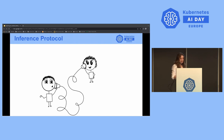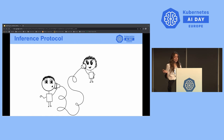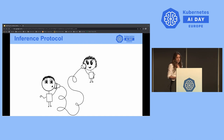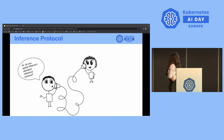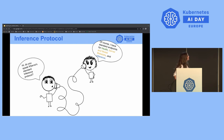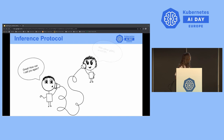Another important feature of KServe is that it uses a standardized inference protocol across all serving runtimes, so people can easily switch from, say, TensorFlow to PyTorch without needing to change how they talk to the inference service. This also makes it easy for testing and benchmarking. KServe supports both HTTP and gRPC, with standard endpoints for health, server and model metadata, and inference.